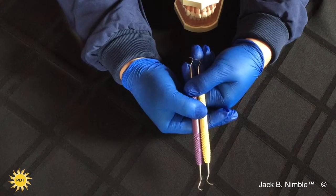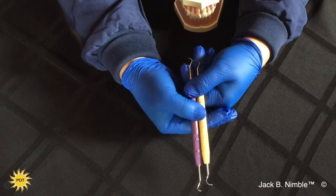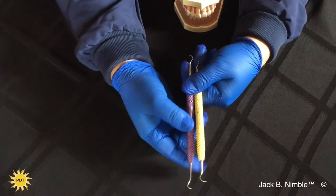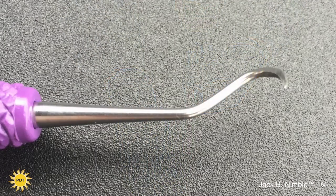Our number one selling Montana Jack is now available in a mini design called the Jack B Nimble. The Jack B Nimble has a slightly longer functional shank and the blade is shorter with a tighter curvature.